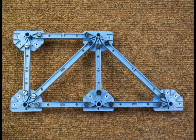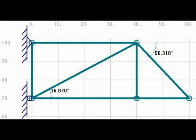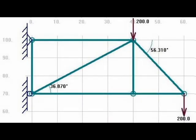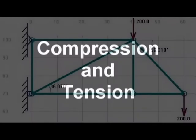This is the physical representation of what the second example truss looks like. This is the free body diagram of the truss. Here it is with the loads acting on it. The two forces that will be calculated are compression and tension.